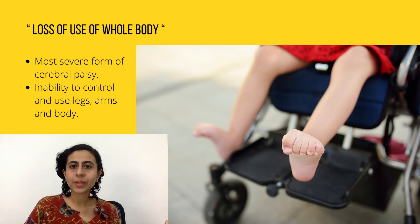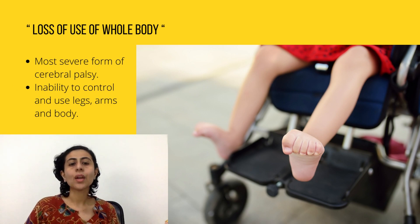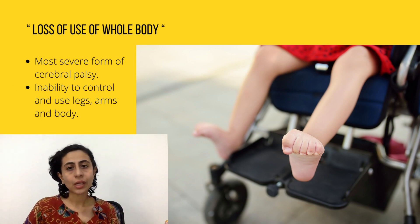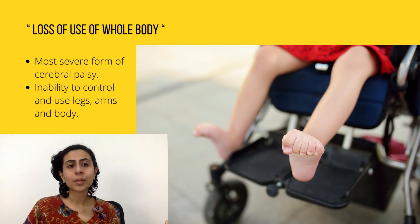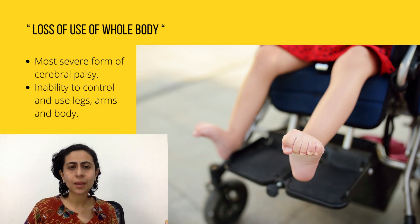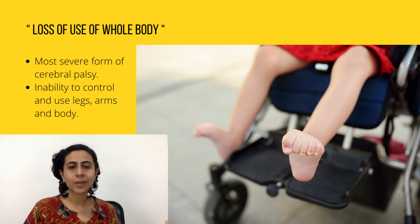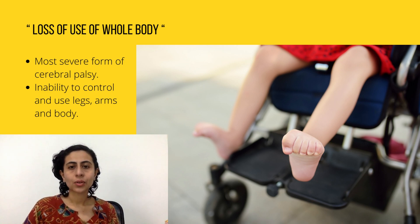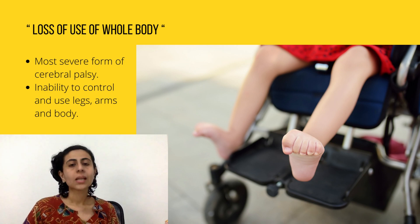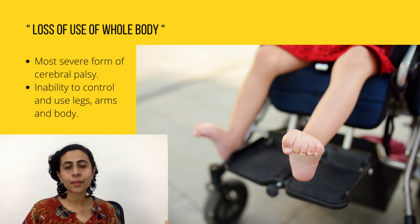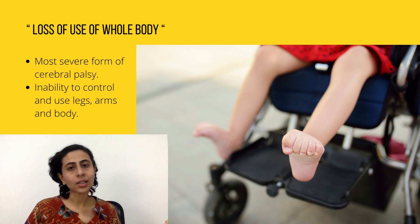Spastic quadriplegia means that the child cannot use their whole body efficiently due to brain damage. This is the most severe form of cerebral palsy pathology, in which the child's overall movements, independence, and use of body is affected. The arms, the core, and the spine do not function well.